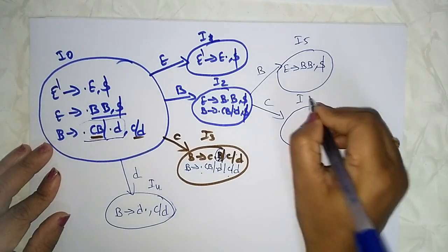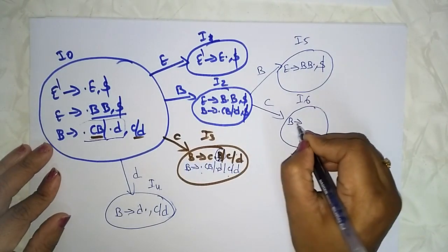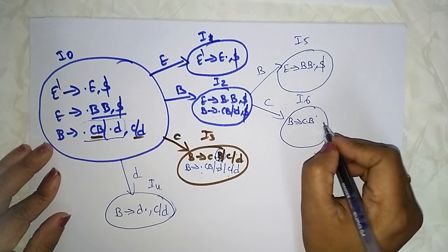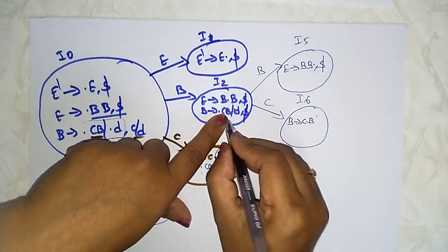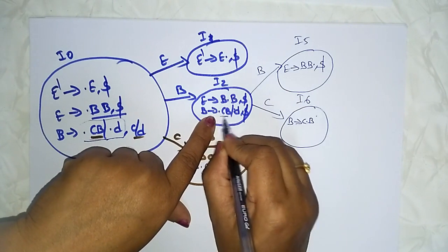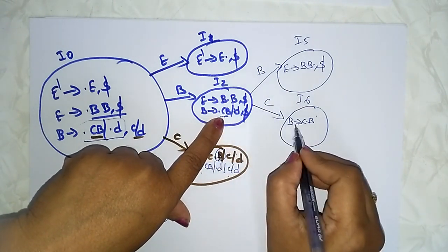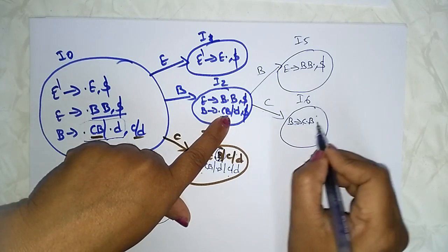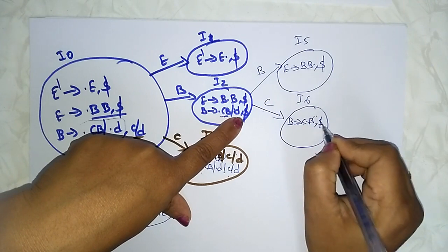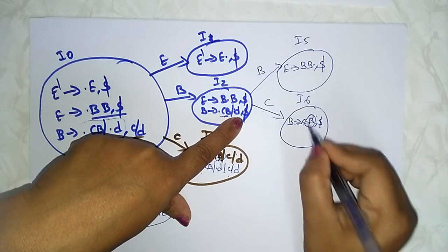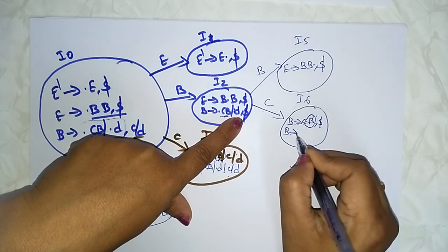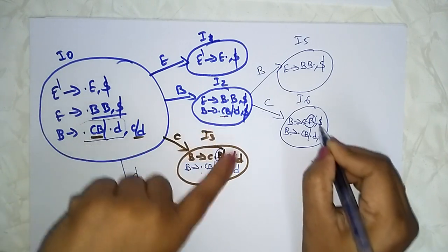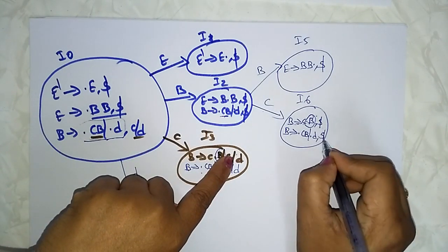I6 on 'c': B → C · B, with dollar as lookahead. For dot B, write the B productions: B → · CB and B → · D. The lookahead value after B is written here — whatever lookahead is present after the dot B, you write that.